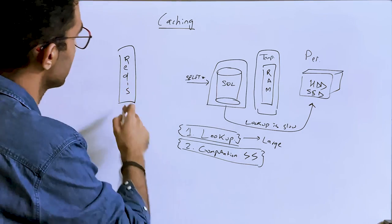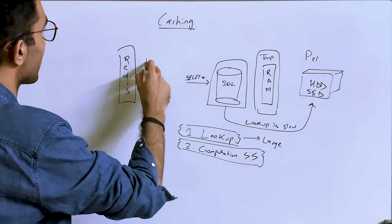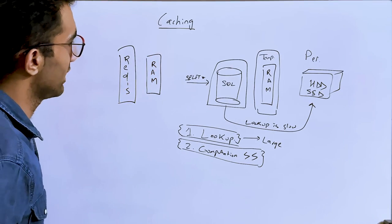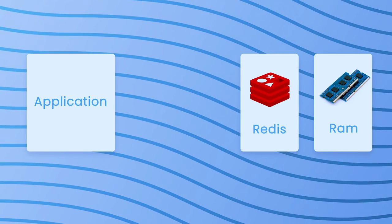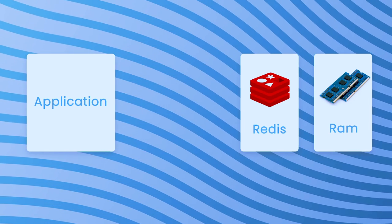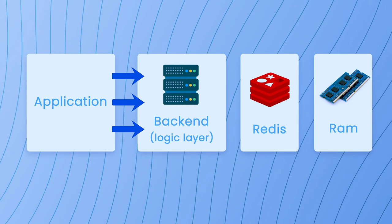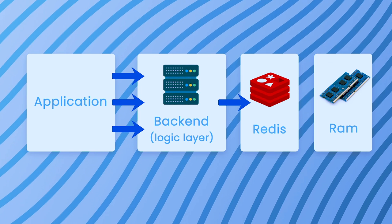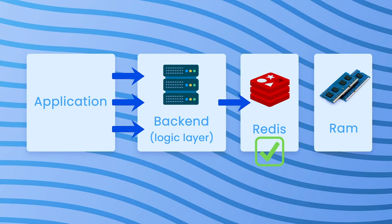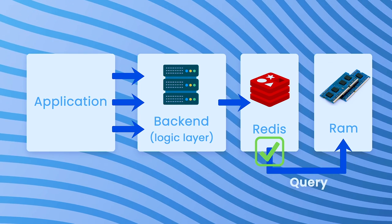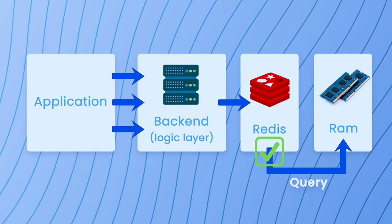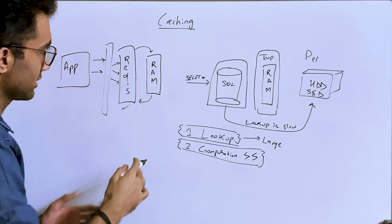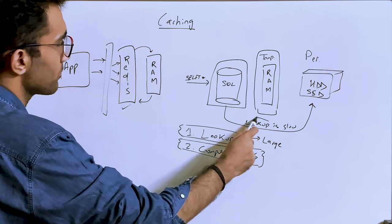How does Redis or any caching system like Memcached solve this? Redis is essentially a wrapper around how you can store, get, and expire things inside your RAM. Whenever your logic layer calls the backend, it first checks if the result of that query already exists in cache — and when it does, it's just querying RAM in a structured way.